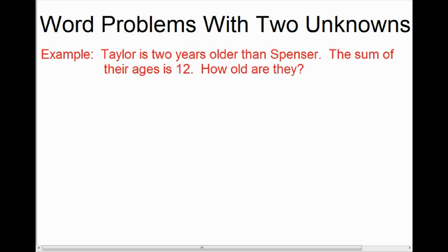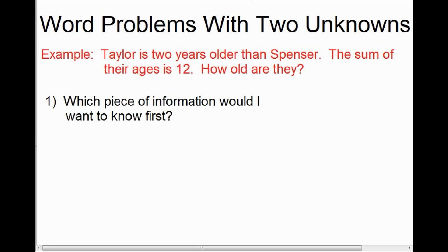When you're approaching a question like this and you're going to solve it algebraically, you're going to write a let statement to start, where you assign a variable to one of the unknowns. The first question you ask yourself is: if I could know one of these unknowns, which piece of information would I want to know? Answering that might take reading the question a couple of times. In this case, the piece of information I would want to know is Spencer's age, because if I was given Spencer's age, I could immediately figure out what Taylor's age is.